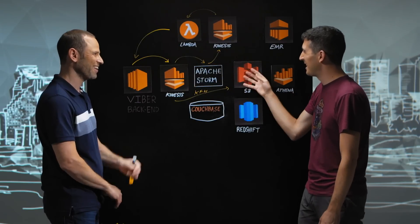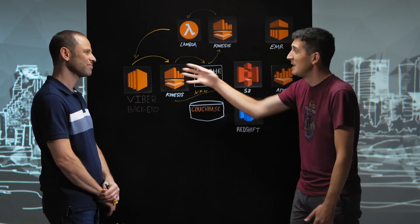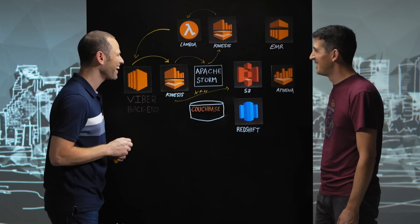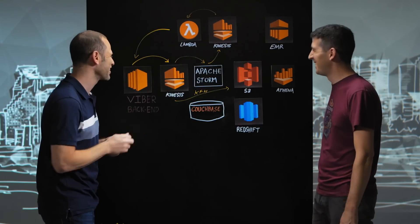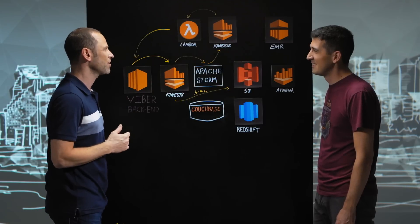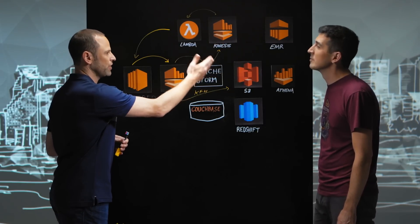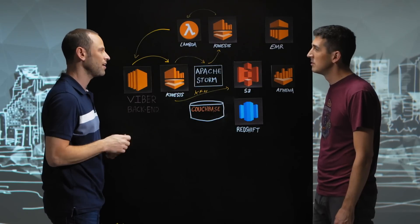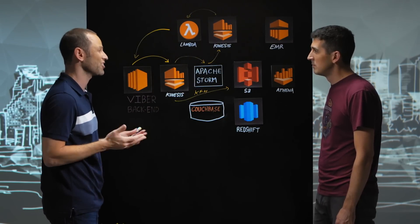There's no Firehose the other way, so how do you get the data back into Kinesis if needed? Unfortunately there isn't a reverse Firehose. So we built our own EMR process which takes the data from S3 and writes it back into Kinesis in case we have an issue — that's basically our backup scenario.